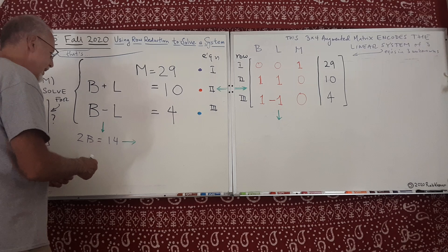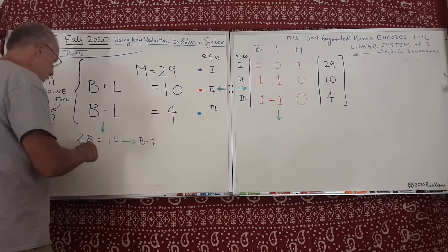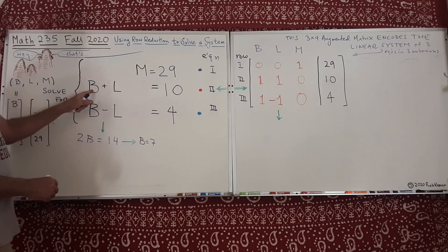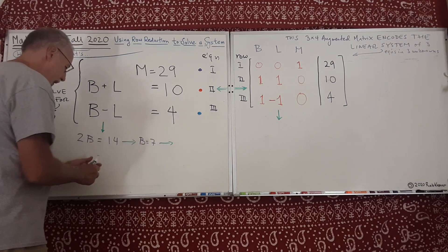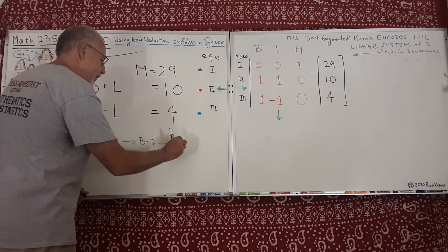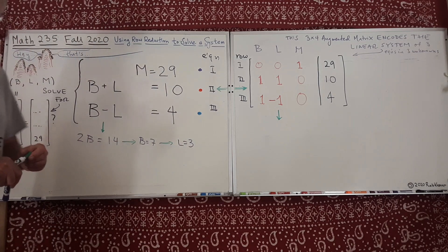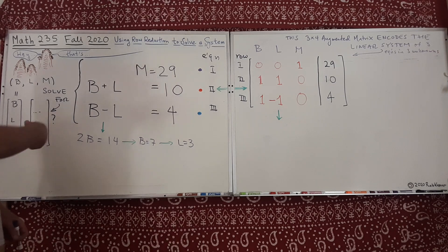And once we know that B is 7, we could substitute back in for B equals 7 and conclude that L is 3. So that was an easy way to do it, and for simple equations, that's probably faster than even encoding it into a matrix.